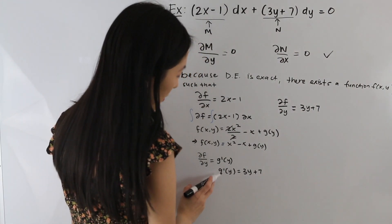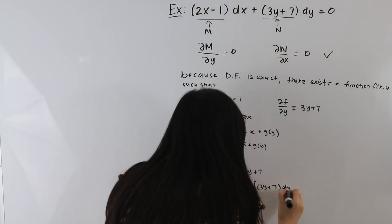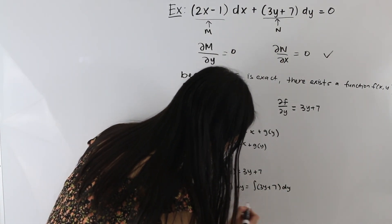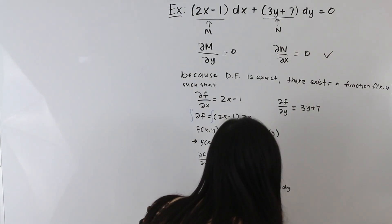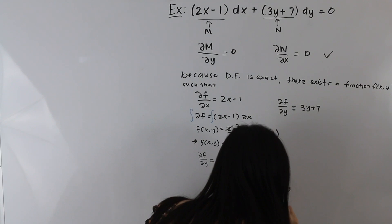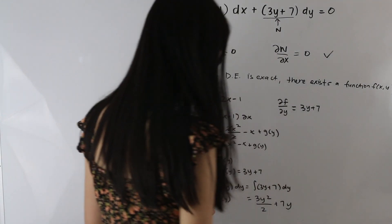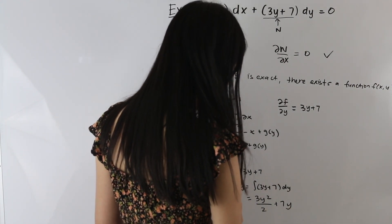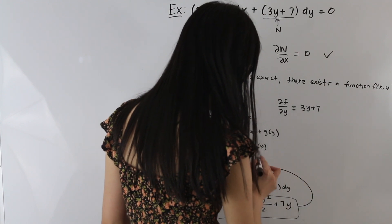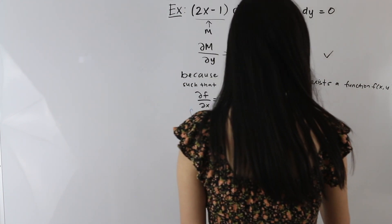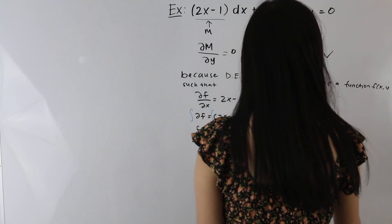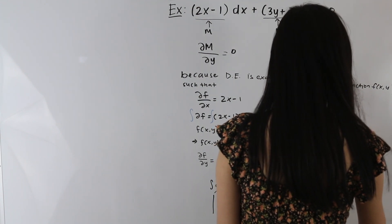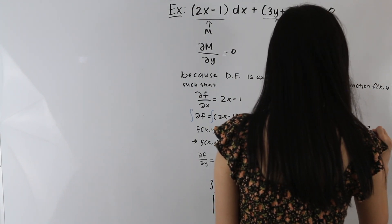Now we integrate both sides. On the left-hand side we get g(y), and on the right-hand side we get 3y²/2 + 7y. Now that we know what g(y) is, we plug it in to get f(x, y) = x² − x + (3/2)y² + 7y.